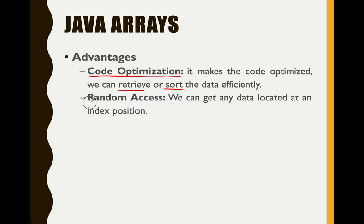We also have random access. When we say random access, we can get any data at any index position. In data structure, there is what we call LILO — Last In, Last Out — and we also have FIFO — First In, First Out. You will know more about this in your higher programming subject.